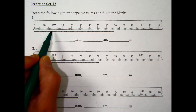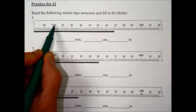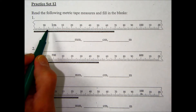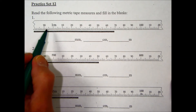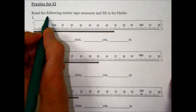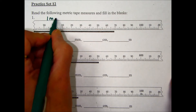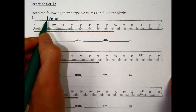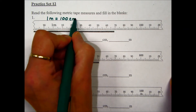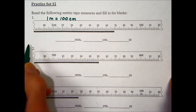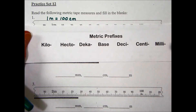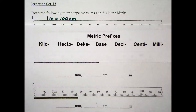The indication of where we're at is this '1M.' M is the abbreviation we use for meter, so we're seeing that this is one meter. One meter is equivalent to 100 centimeters, based on the prefixes used in the metric system.